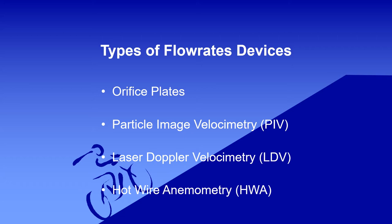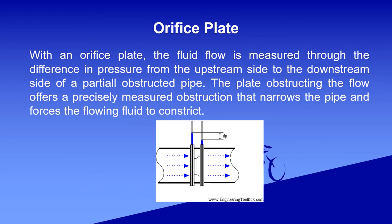From our research and study, we found four types of flow measurement devices. Number one is orifice plates. Number two is Particle Image Velocimetry, called PIV for short. Number three is Laser Doppler Velocimetry, LDV. And the last one is Hot Wire Anemometry, called HWA.